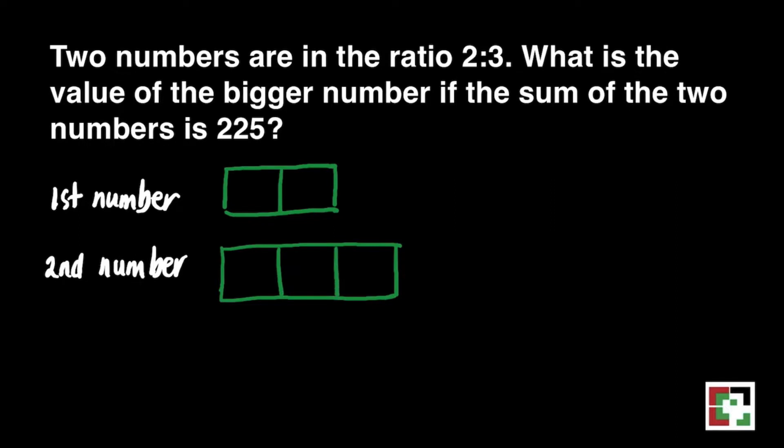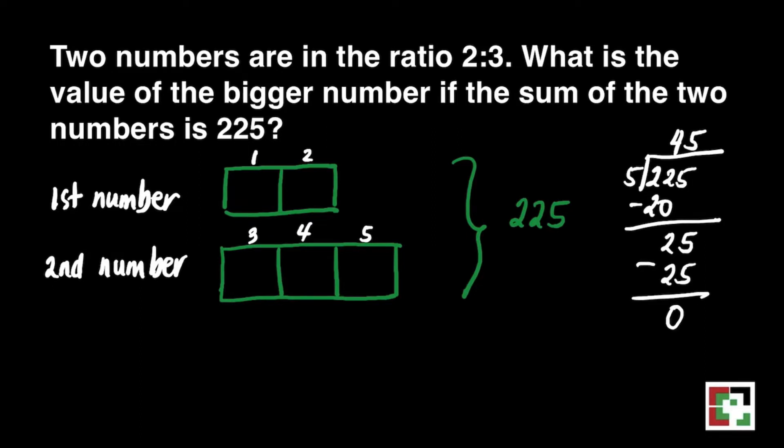It also says there that the total is 225. How are we going to get the value of each box? We will just divide it into five boxes. So, 225 divided by 5. By dividing 225 by 5, we will find the number in each box. So, there will be 45 in each box.